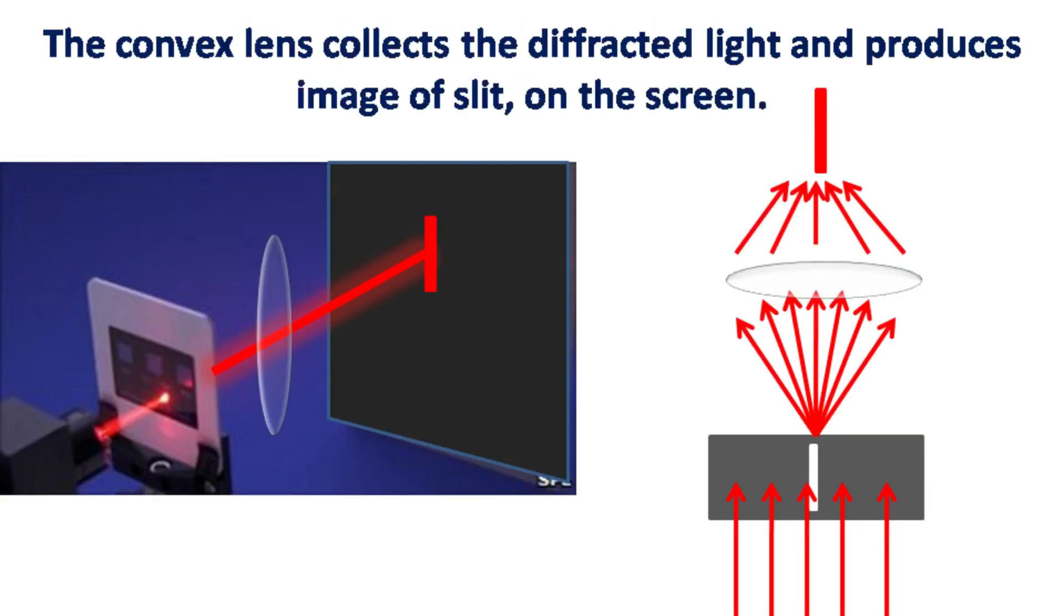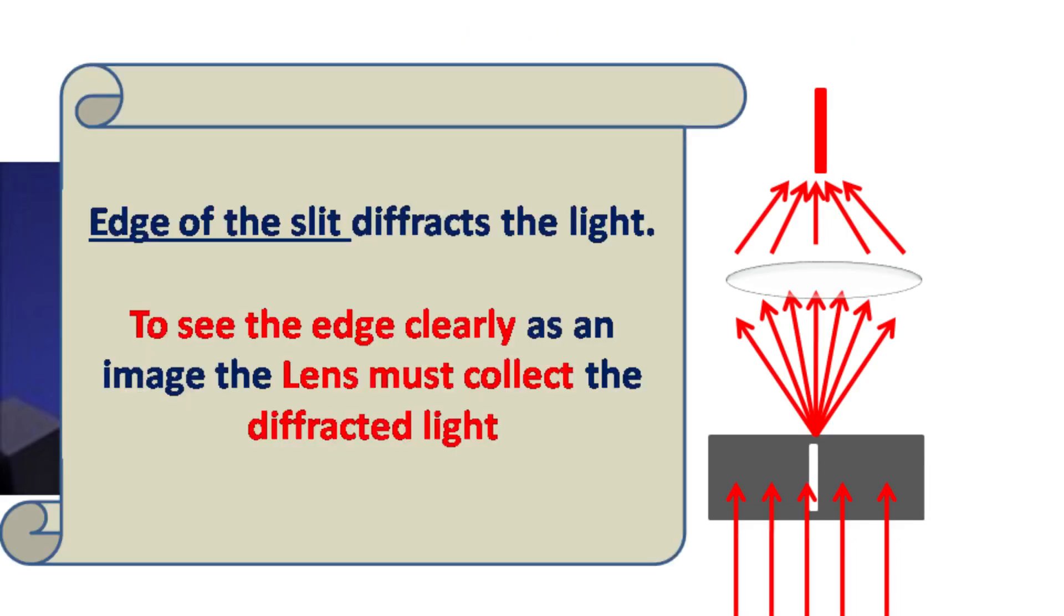If we have a convex lens in between, then the lens collects the diffracted light and focuses it on a screen. This results in the formation of the image of the slit. The image is nothing but an interference pattern of the diffracted light.